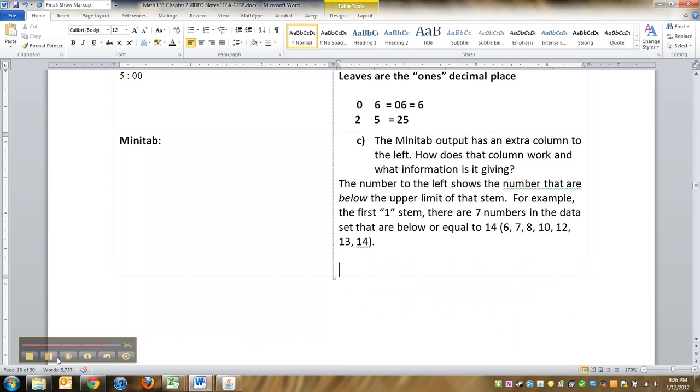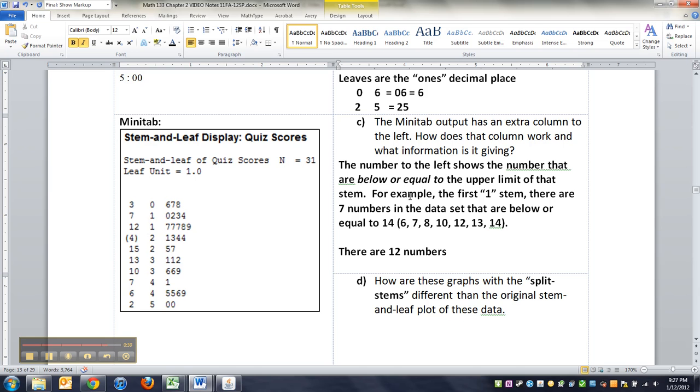Oops hold on. So really, I should say below or equal to, right, below or equal to the upper limit. So for example there are 12 numbers below or equal to 19. Right? Because here's 19 and there are 12 numbers below that.